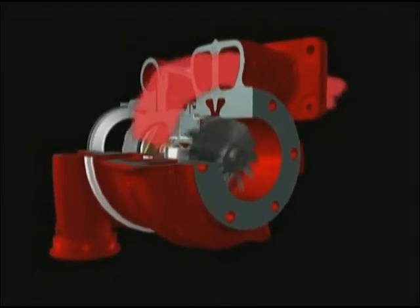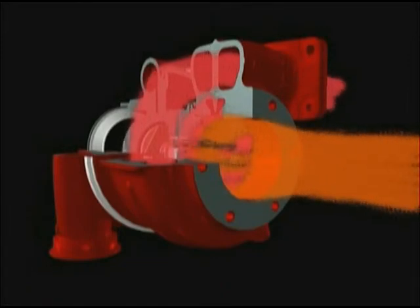The exhaust gas enters via the turbine housing, turns the turbine and leaves through the exhaust outlet. Exhaust gas temperatures can reach 950 degrees C, which means that special high temperature materials are needed for the turbine wheel and housing.